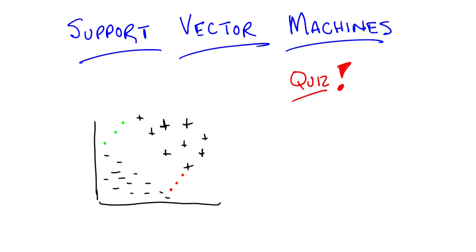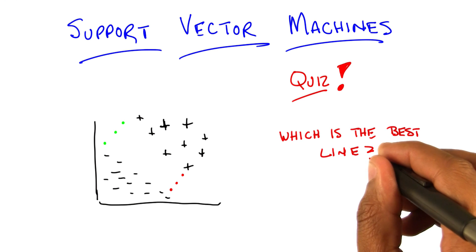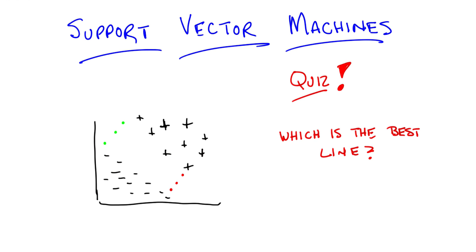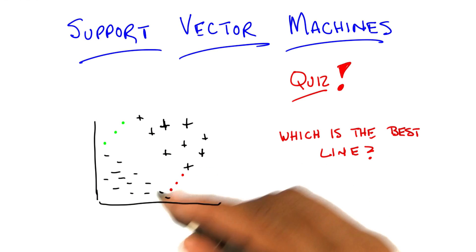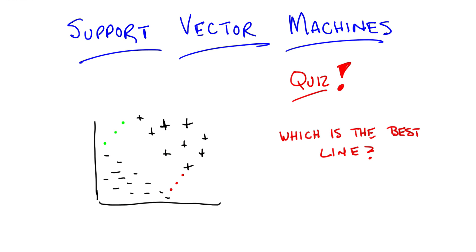So here's the quiz for you, Michael. I've drawn on here some points, some labeled positive and some labeled minus, representing two different classes. And you'll notice that you could draw a line to separate them. Therefore, they are linearly separable. The question I have for you is simply this: which is the best line? I'm not going to ask you to just draw some random line, because that's too hard to give feedback on. So instead, I've drawn three green dots here on the upper left, and three red dots here on the bottom right. What I want you to do is select one of the green dots and one of the red dots. Since you'll have two dots, that will define a line, and that'll be the way you indicate to me which of the lines is, in fact, the best line.